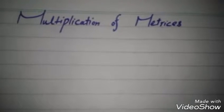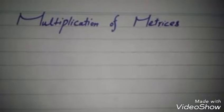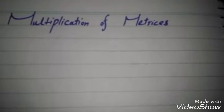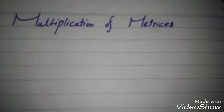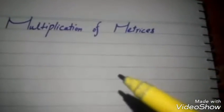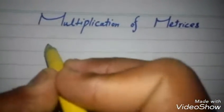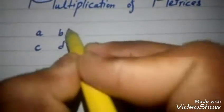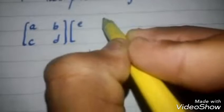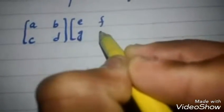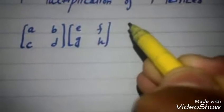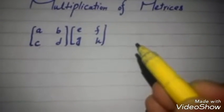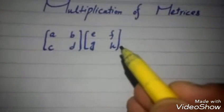Today I will tell you the method of solving matrices by multiplication — how we multiply two matrices. Now we take an example: matrix A with entries A, B, C, D and E, F, G, H. Before solving, please subscribe to my channel.